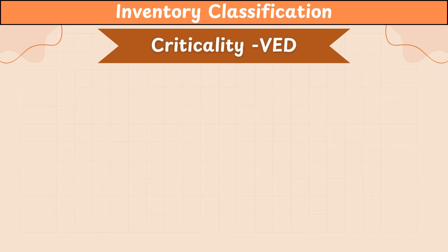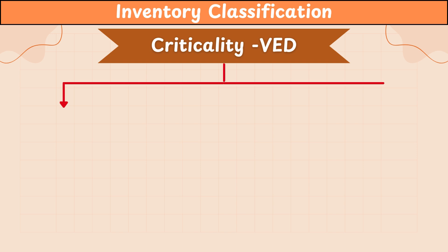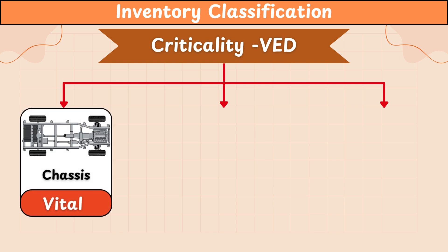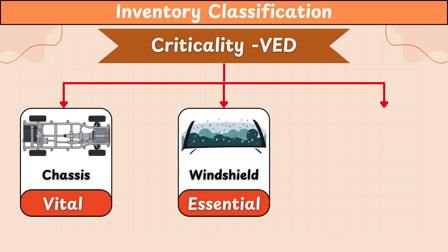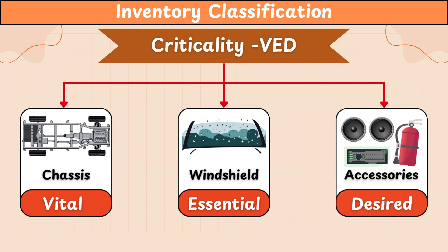The next classification is based on criticality: VED, which stands for Vital, Essential, and Desirable items. Vital items are necessary for operations to run smoothly. Essential items don't stop operations if unavailable, but they could increase cost or lower efficiency. Desirable items are non-critical and can be sourced from anywhere in the nearby market, so companies don't usually keep stock of these items. This classification is especially important for capital-intensive businesses like production plants.